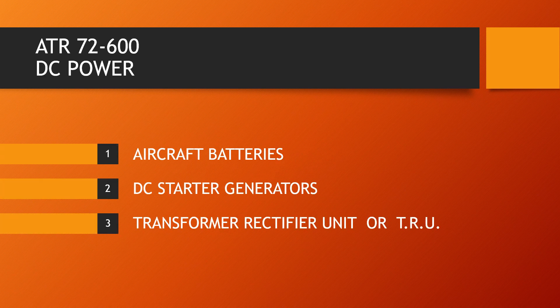In this part, I am going to discuss about DC power. DC power of ATR 72-600 is available from 3 sources: 1. Two aircraft batteries. 2. Two engine-driven starter generators. 3. Transformer Rectifier Unit or TRU.